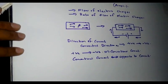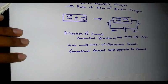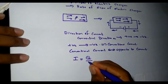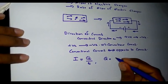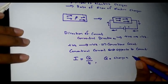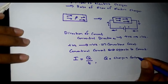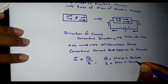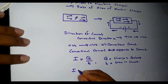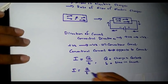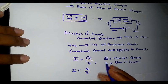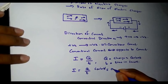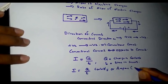We can define electric current as the rate of flow of charges: I is given by Q divided by T, where Q is the charge in coulombs and T is the time of flow in seconds. So the unit of electric current is coulombs per second, or amperes, represented by the capital letter A.